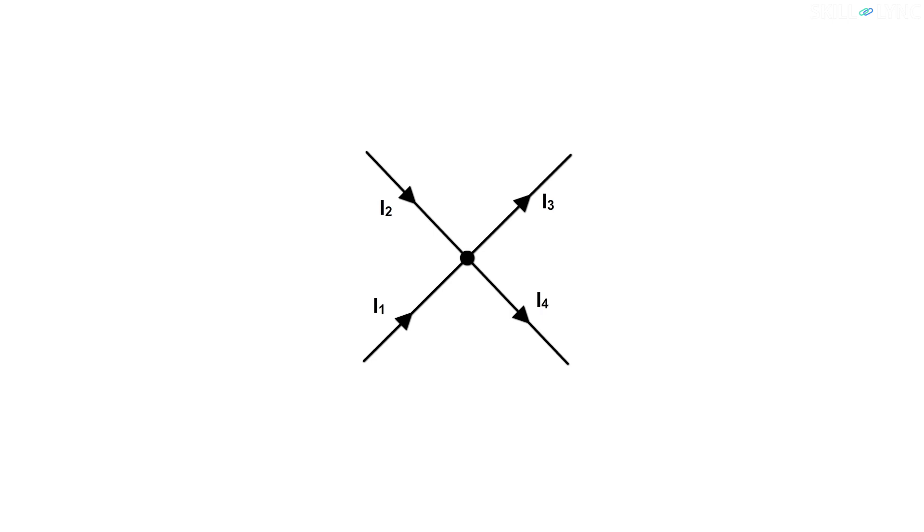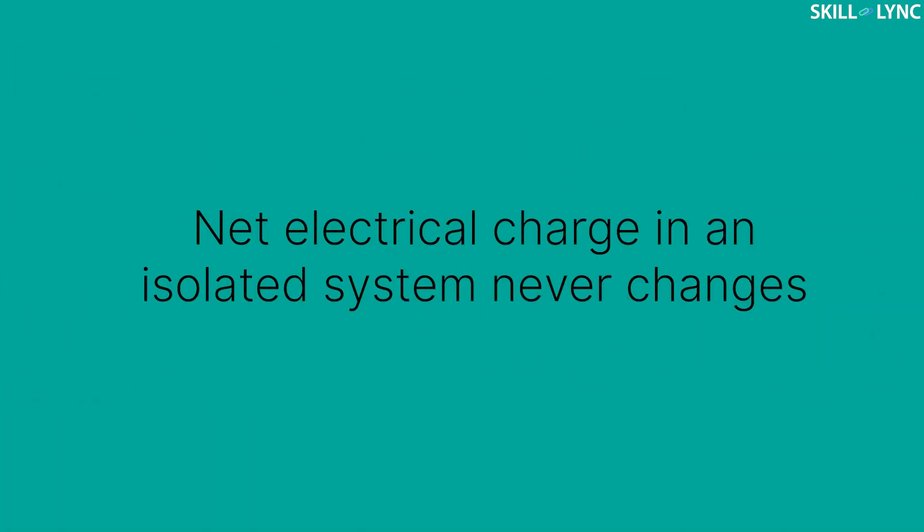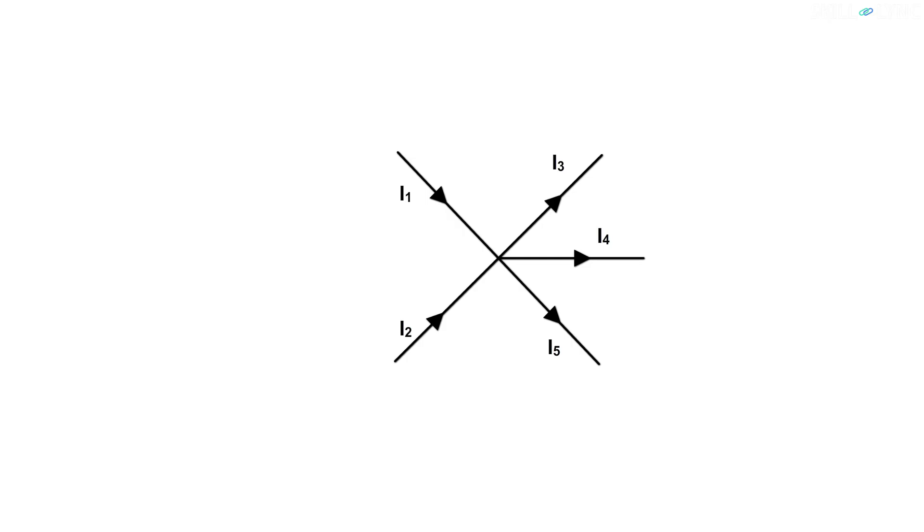The current in the given setup is I1, I2, I3, and I4. If we look at the image, we observe that I1 and I2 are pointing towards the junction, while I3 and I4 are pointing away from the junction. According to Kirchhoff's rule, I1 plus I2 equals I3 plus I4. This law holds true because of the principle of conservation of charges, which states that the net electrical charge in an isolated system never changes.